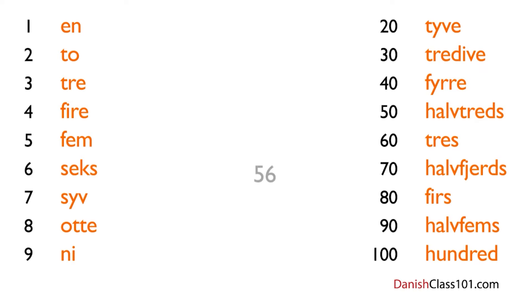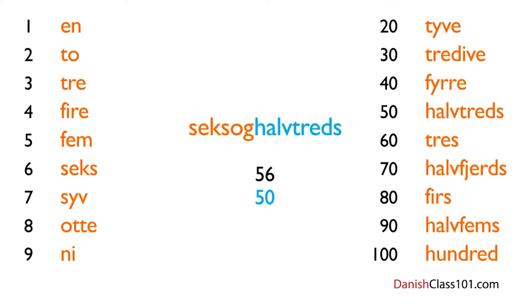The last thing to learn in this lesson is how to form compound numbers above 20 — and this is also super easy. Take the numbers from the previous lesson and simply add 'og,' which means 'and,' and then the tens. For example, how would you say 56 in Danish? Take 6, add og, then add 50 — halvtreds. So: seks og halvtreds. Easy, isn't it?